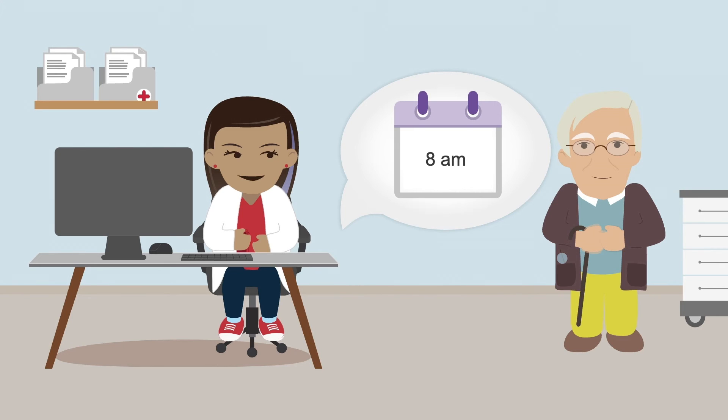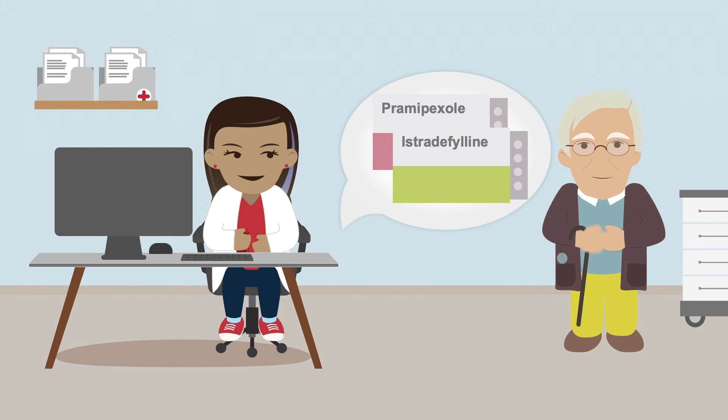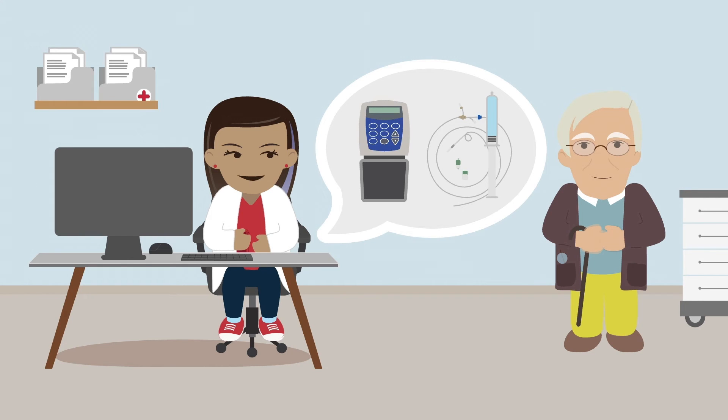Following the tube placement, you schedule an appointment for 8 a.m. and provide the following instructions: stop carbidopa levodopa at 8 p.m. the night before his appointment, take other medications on their usual schedule, so in his case he's taking pramipexole and istradefylline, and bring one medication cassette, the pump, and supplies for the tube to the appointment.